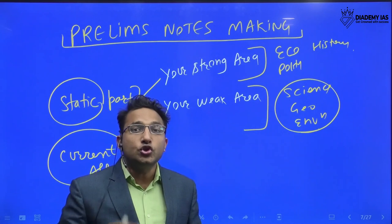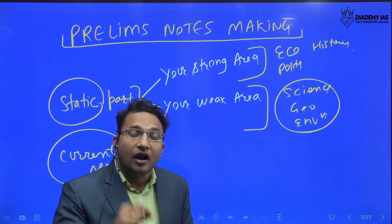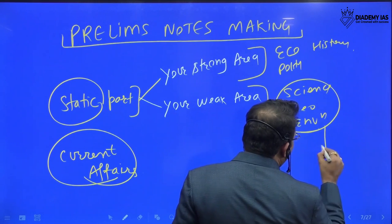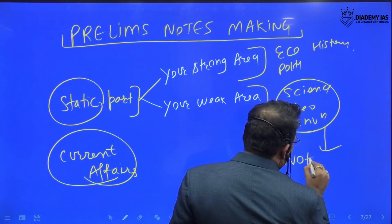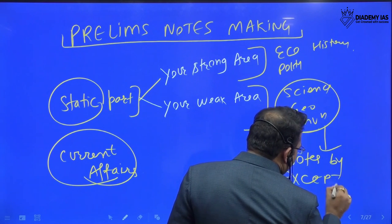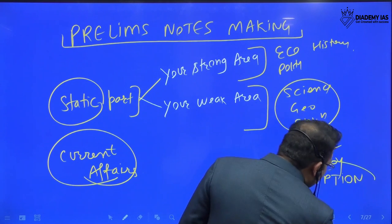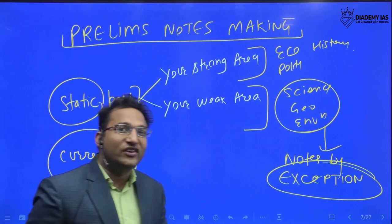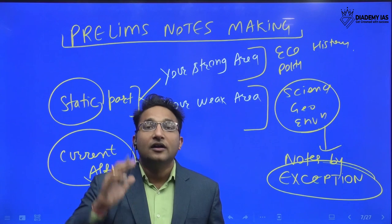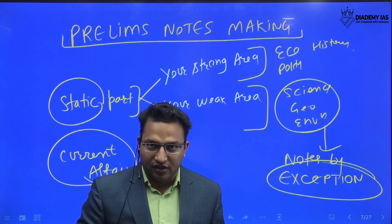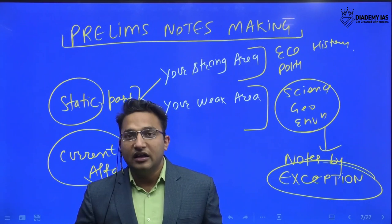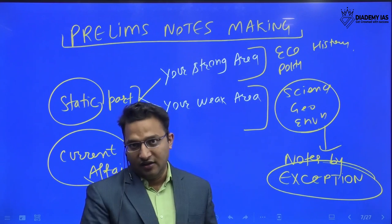But in the weak area, you should definitely make the short notes. But do not make 100%. It should be notes by exception. What is this? Basically, those topics which you think specifically that you are facing difficulty. For example, in geography, you are facing difficulty in climatology. So in that case, you have to focus on that particular notes making. So you will make a separate register where you are just noting down the keywords from your weak area.